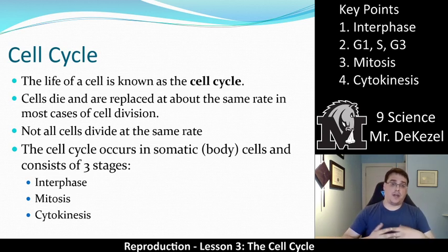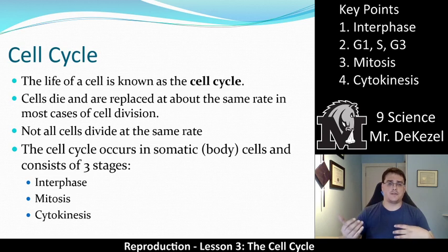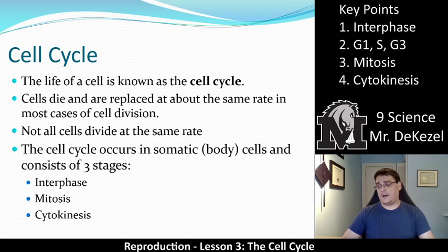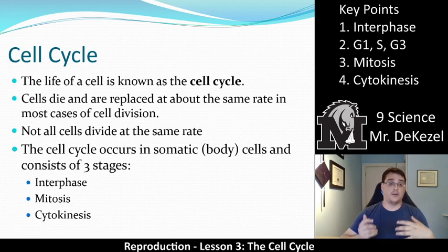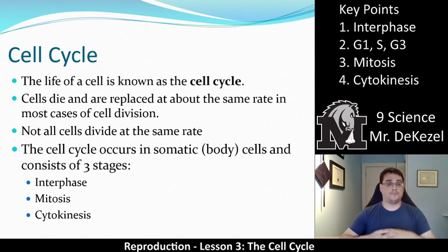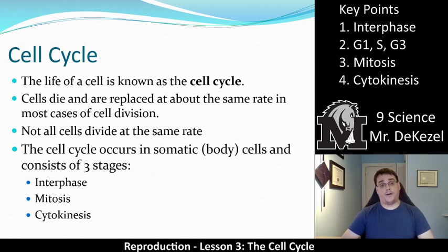But not all cells divide at the same rate. For example, your cheek cells — because you're always rubbing food on your cheeks and maybe biting them — duplicate really, really quickly. That's why DNA might be taken from your cheek cells; there are a bunch of loose ones there and you're not going to miss them. Whereas cells in your liver or pancreas or other organs may not divide very rapidly at all. The cell cycle occurs in body cells — that's everything except your sex cells, which we'll get into as we move forward.